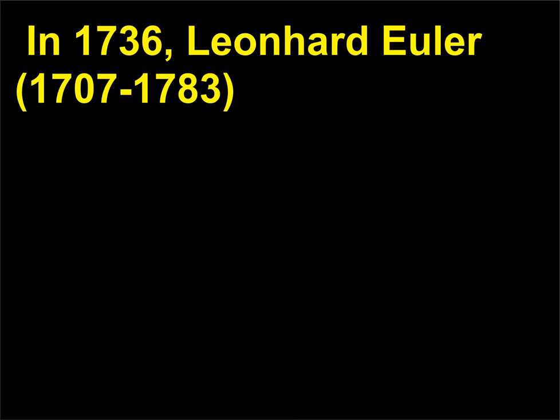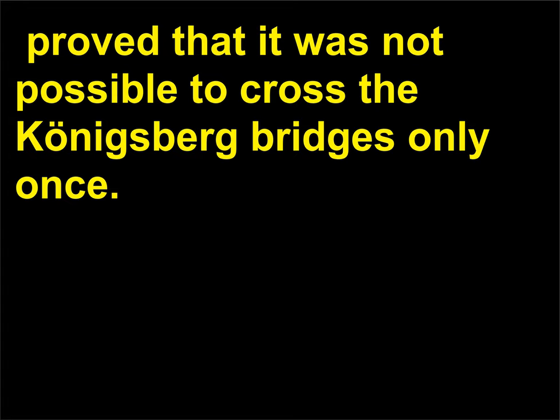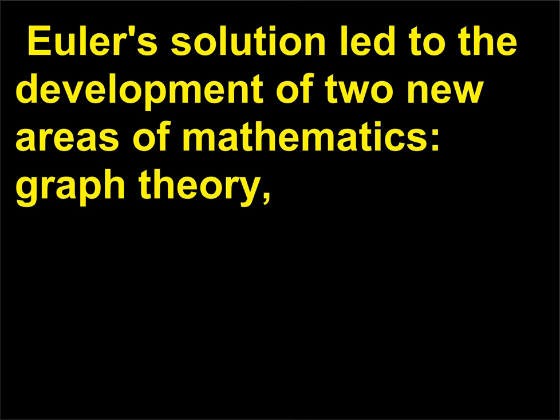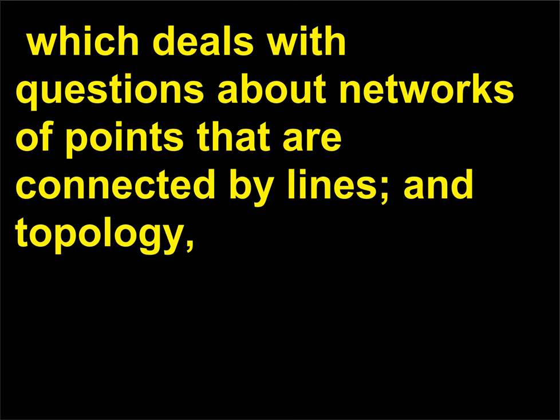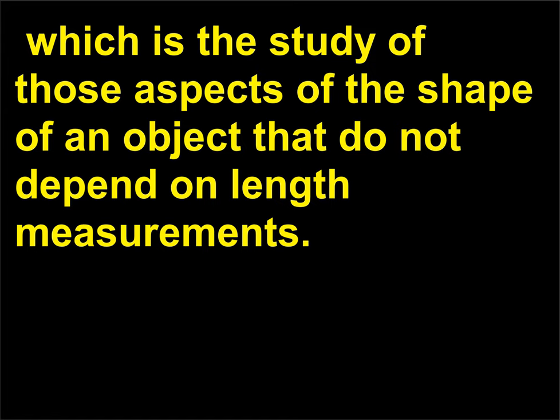In 1736, Leonard Euler, 1707 to 1783, proved that it was not possible to cross the Königsberg bridges only once. Euler's solution led to the development of two new areas of mathematics: graph theory, which deals with questions about networks of points that are connected by lines, and topology, which is the study of those aspects of the shape of an object that do not depend on length measurements.